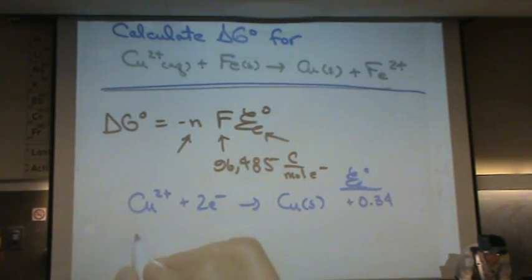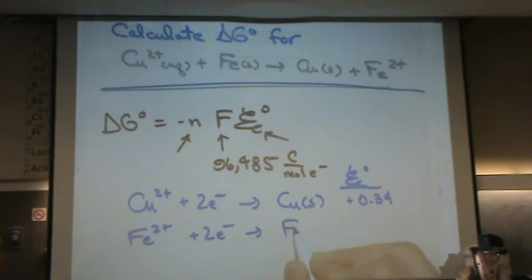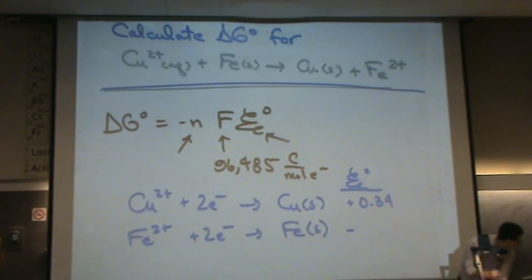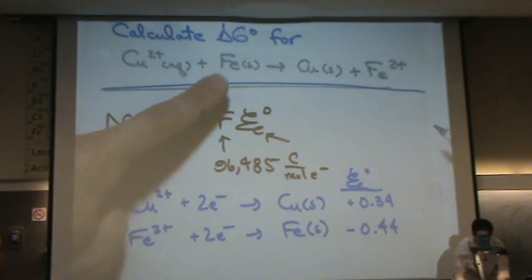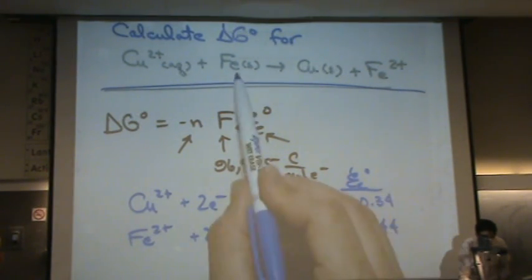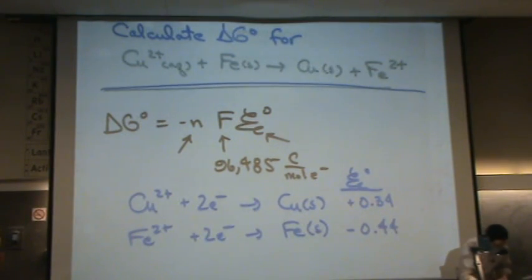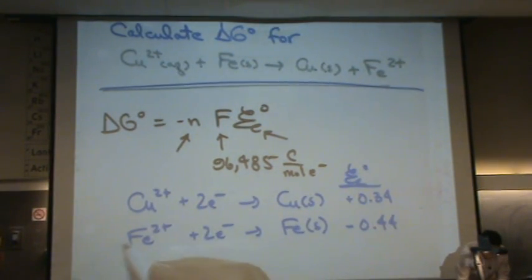Now in the table, the iron one is written the other way. It's written as iron two plus plus two electrons goes to iron solid, and that's a negative 0.44. So note, I have to flip the bottom one because I actually want iron going to iron two plus in the overall reaction.